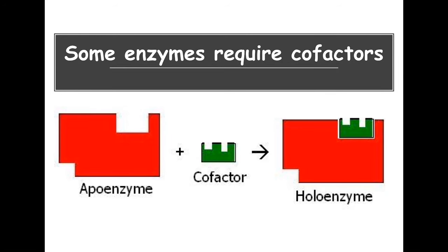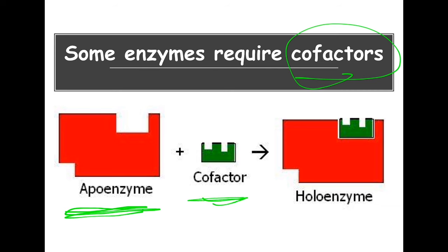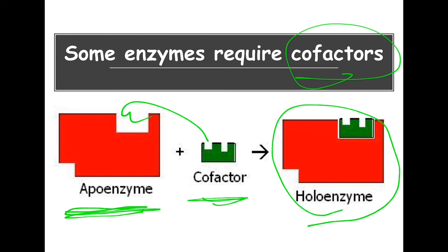Some enzymes require what we call cofactors. An enzyme that requires a cofactor cannot be functional until it has that cofactor — such an enzyme is called an apoenzyme. A cofactor can be something like vitamins. The cofactor associates with the active site of the apoenzyme, and together they form a holoenzyme, which can be active. Remember: not all enzymes require a cofactor, but for those that do — apoenzyme plus cofactor equals holoenzyme.